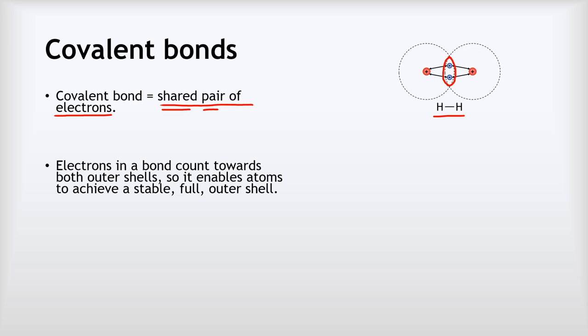Why do these things form? The reason is that the electrons in the covalent bond count towards both of the atoms' outer shells, so it helps them both complete their outer shells, which is what atoms want to achieve to become stable. The electrons in the pair can go around one of the atoms so it's got a full shell, but they also can orbit the other atom so that it's got a full shell as well.